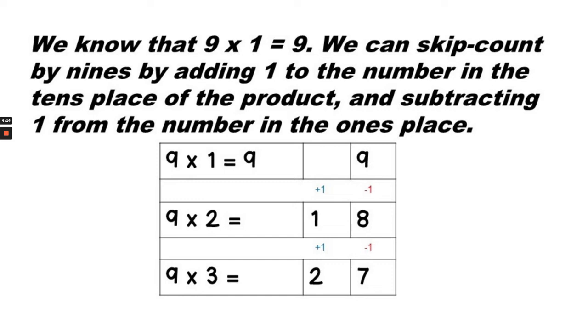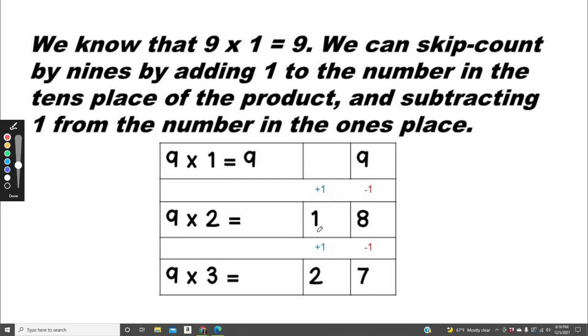9 times 2 equals 18, so we added 1 to the tens place and subtracted 1 from the ones place. Going on now to 9 times 3, we added another 1 to the tens place, and we subtracted 1 from the ones place. So 9 times 3 equals 27.